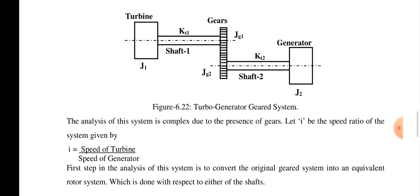The speed ratio i is defined as the speed of the turbine to the speed of the generator — that is, the ratio of input to output. The first step to analyze the system is to convert the original gear system into an equivalent rotor system.